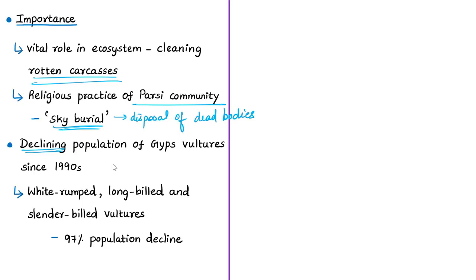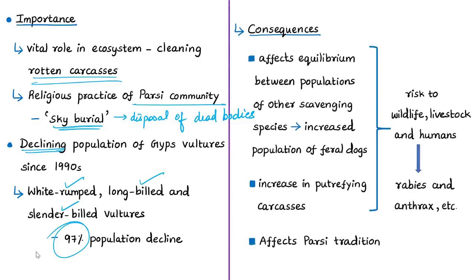The population of Gyps vultures in the Indian subcontinent has crashed since the 1990s. The populations of the three resident vultures — the white-rumped vulture, long-billed vulture, and slender-billed vulture — have declined by around 97% during the last two decades. This affects the ecosystem because removing a major scavenger disrupts the equilibrium between populations of other scavenging species. Feral dog populations have been increasing in areas where vultures are absent.